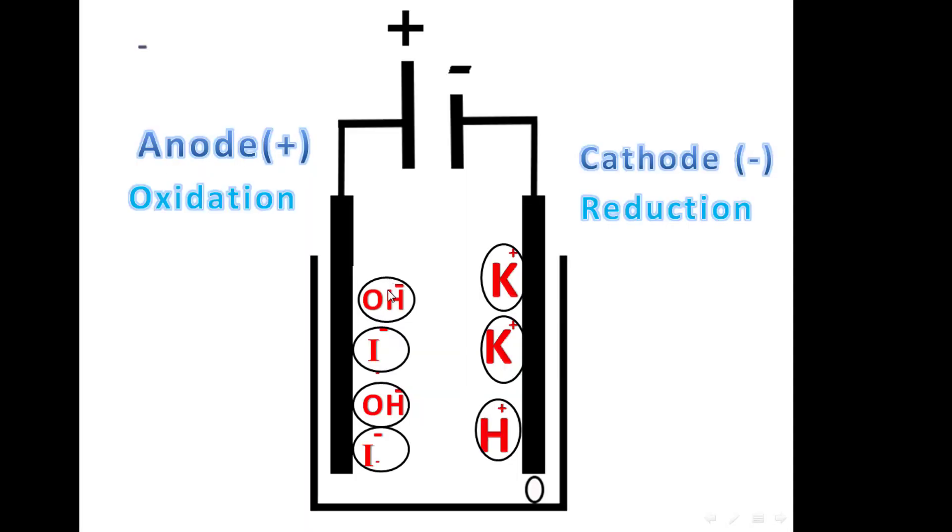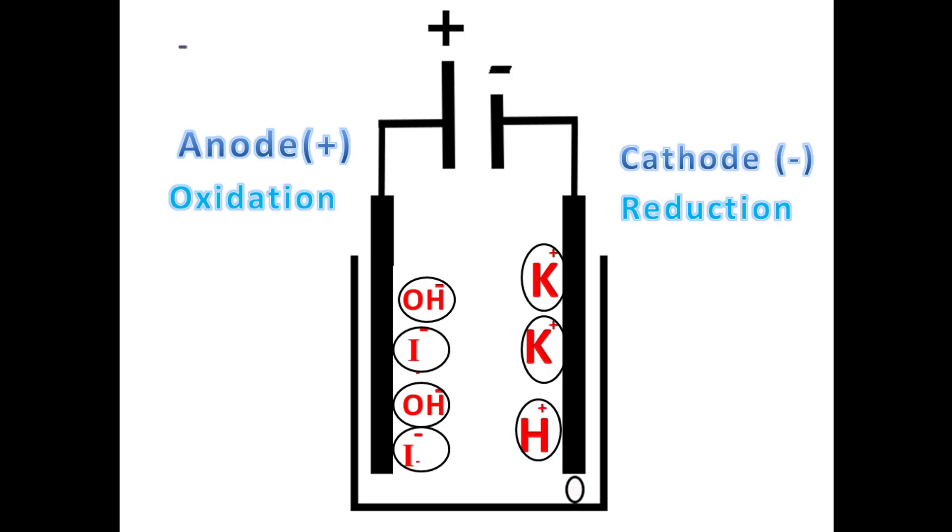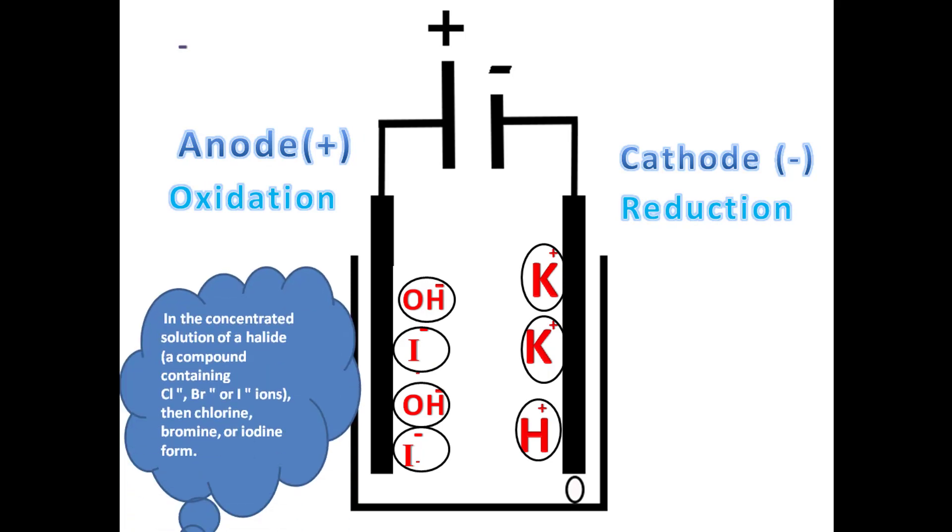At the anode we have a competition between OH- and I- - which of these two ions will be oxidized? According to the rule, we have a concentrated potassium iodide which means we have a lot of I- ions in the solution, which gives priority for I- to be oxidized. We have a concentrated solution of halide, so I2 will be formed.